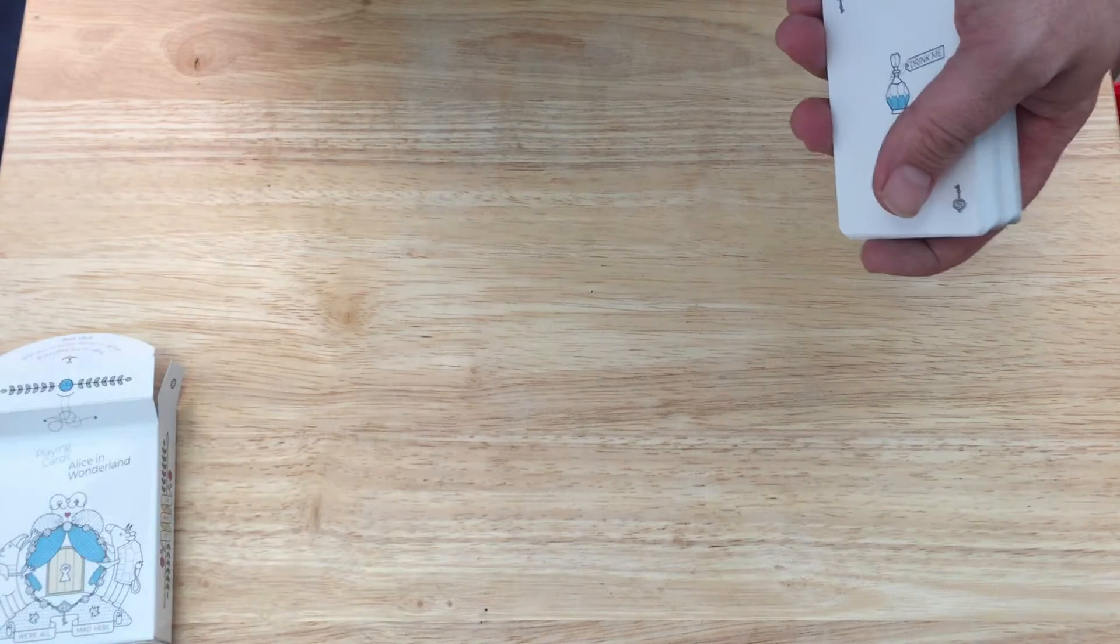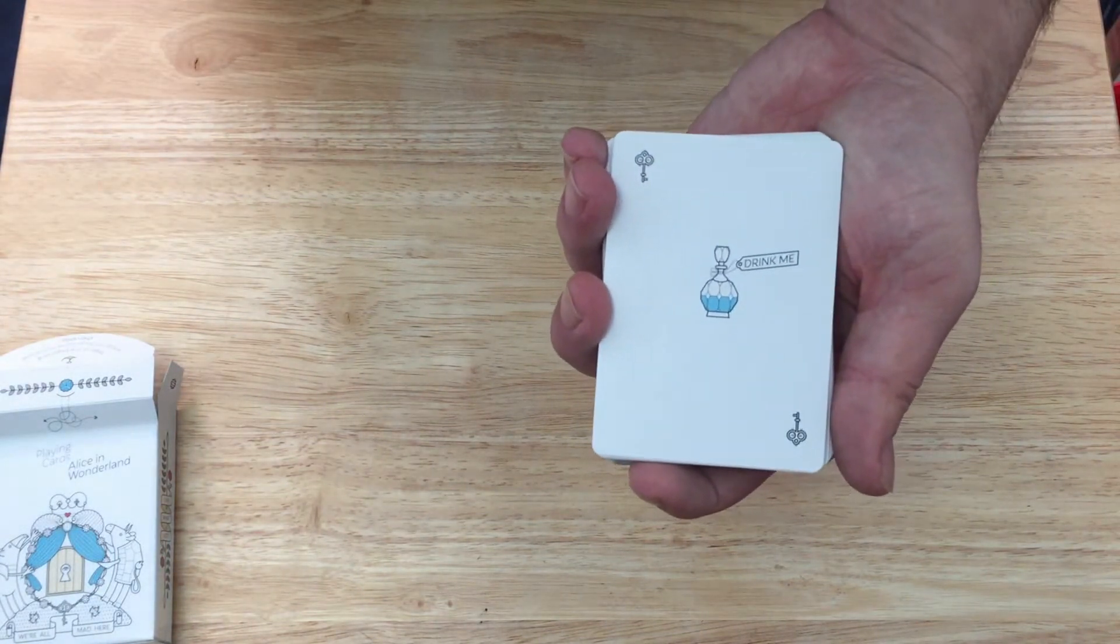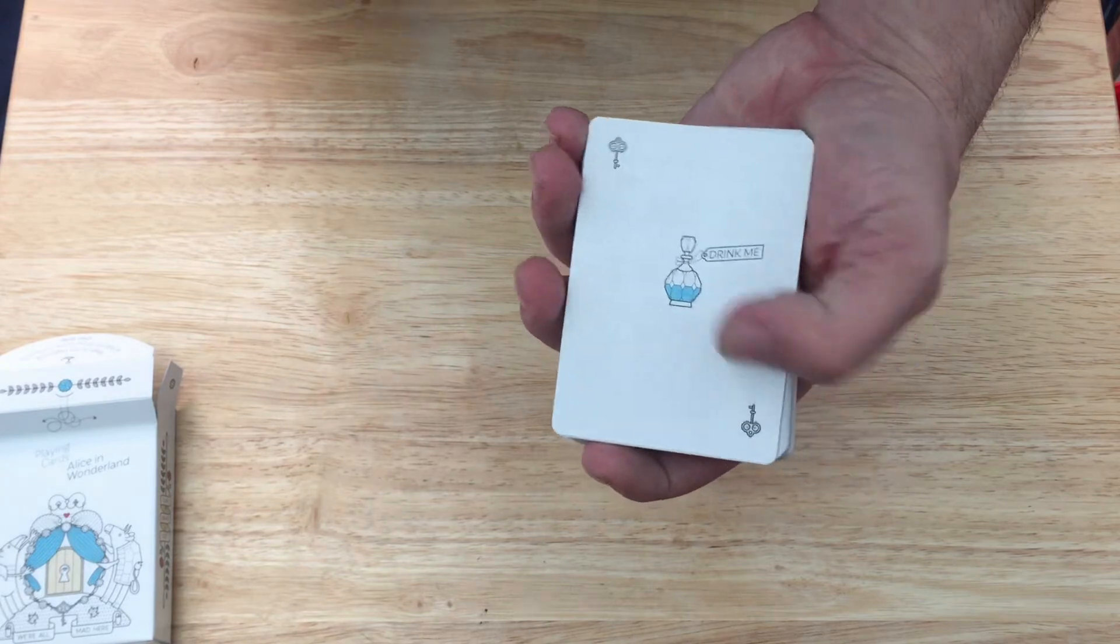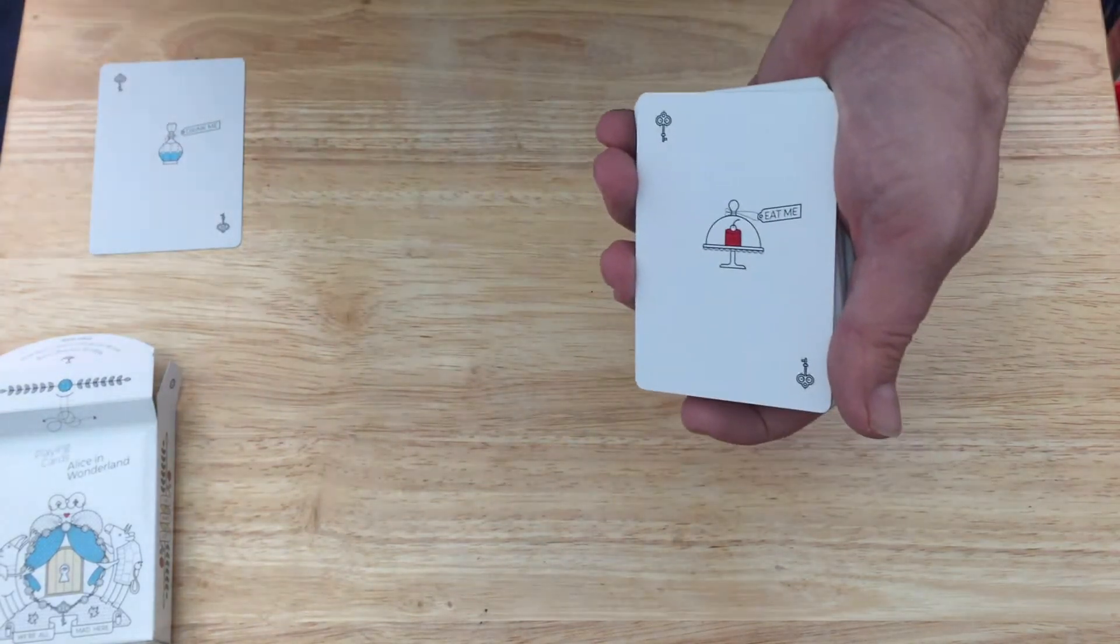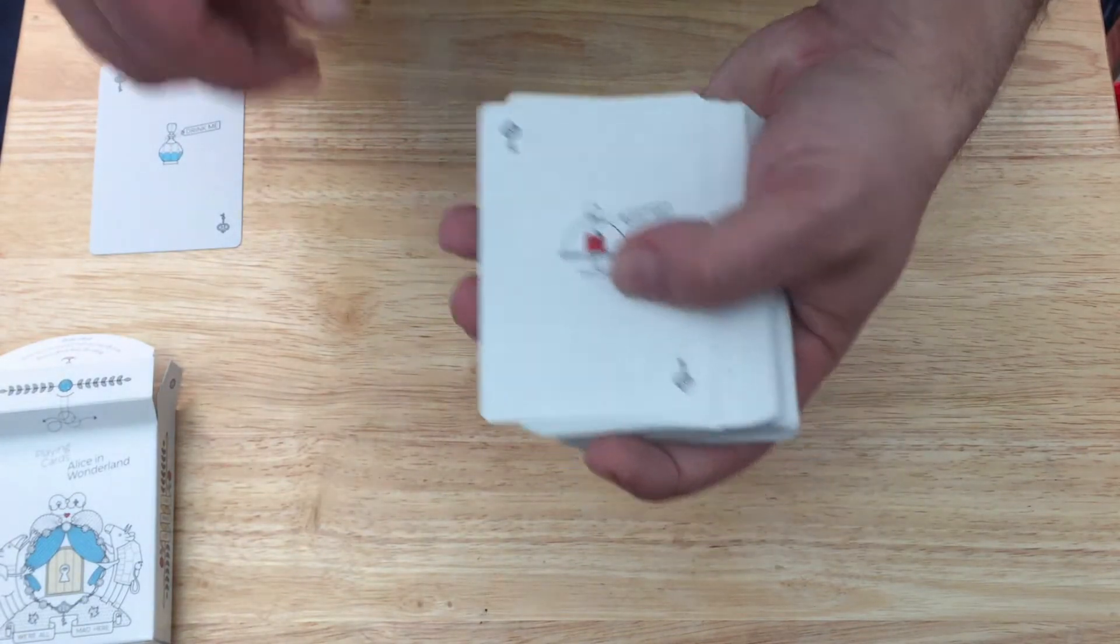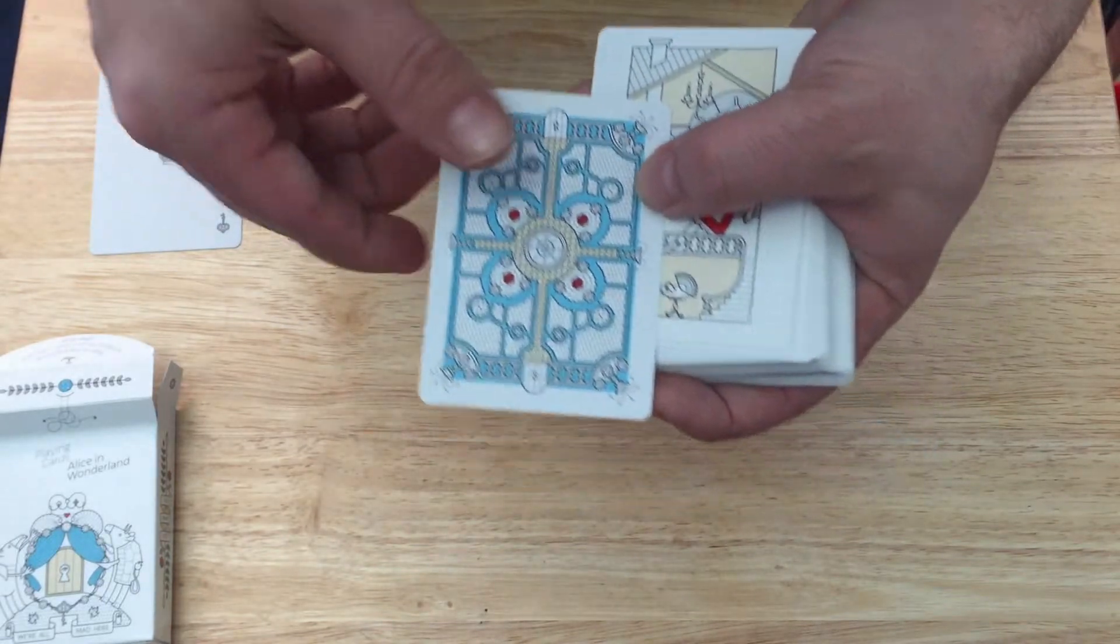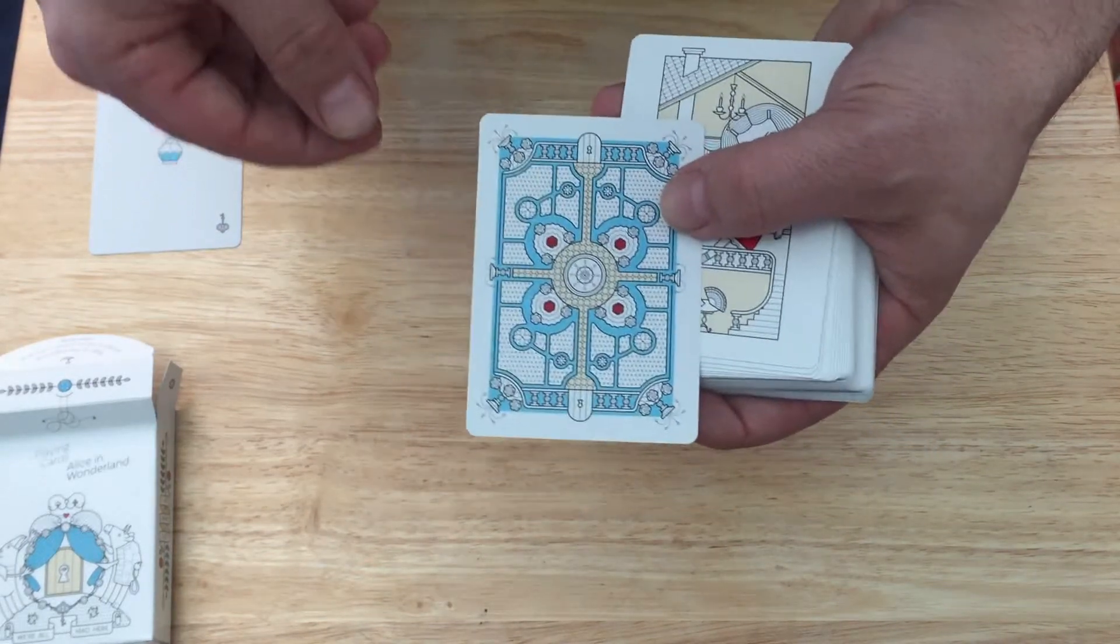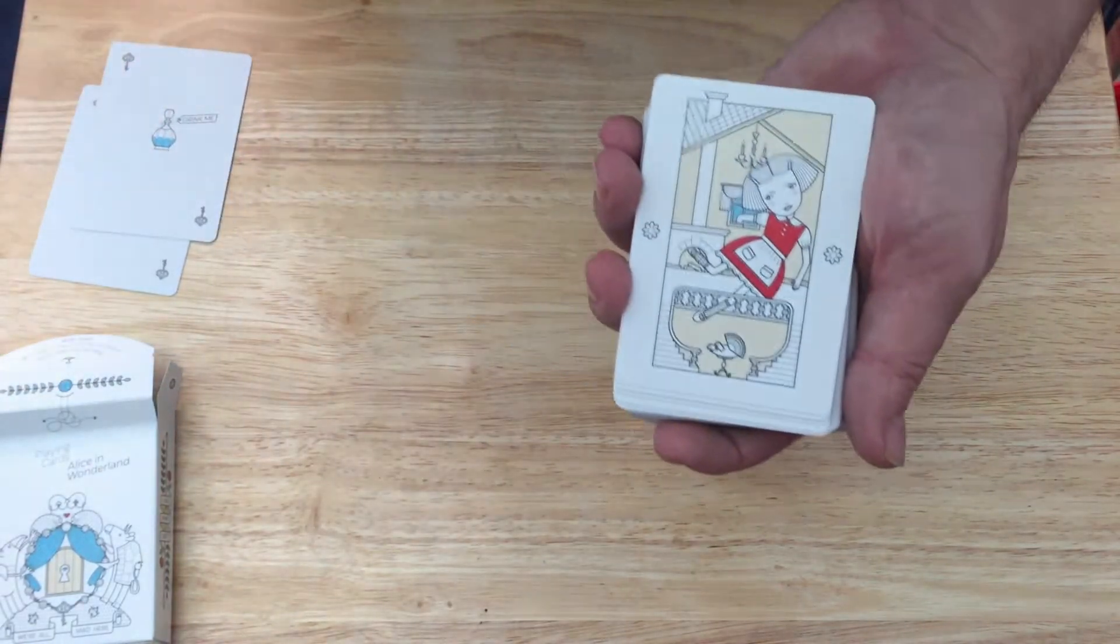Okay, the jokers. This one is a magical mixture, it says drink me, some keys in a corner, and this one is a cake that says eat me. The back design by the way, it seems a little bit thicker on the borders, but that's just the way it is with the design. It's a nice fun little back design.